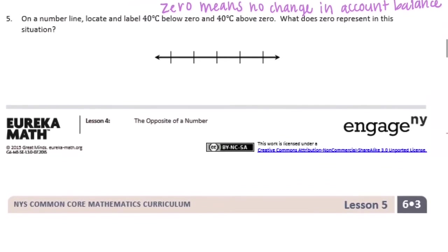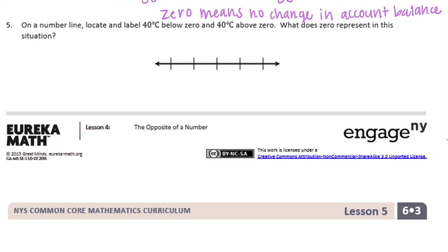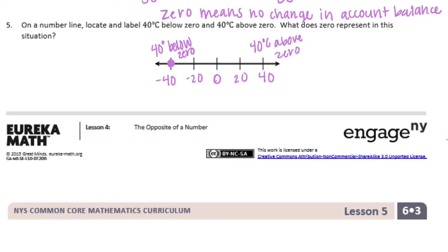Number 5: on a number line, locate and label 40 degrees Celsius below zero and 40 degrees Celsius above zero. Zero is in the middle, with 40 and negative 40 on either side. We can label 20 halfway between. Negative 40 is 40 degrees Celsius below zero, and positive 40 is 40 degrees Celsius above zero. Zero represents 0 degrees Celsius.